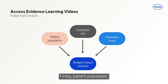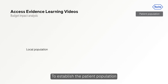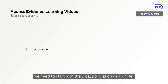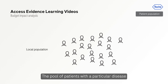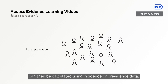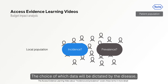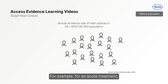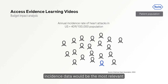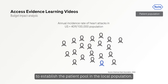First, patient population. To establish the patient population for the duration of the analysis, we need to start with the local population as a whole. The pool of patients with a particular disease can then be calculated using incidence or prevalence data, the choice of which will be dictated by the disease and the role of the new intervention in its management. For example, for an acute treatment such as that given following a heart attack, incidence data would be the most relevant to establish the patient pool in the local population.